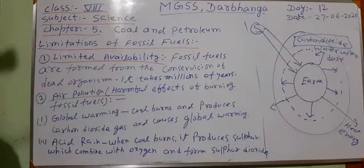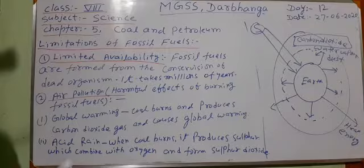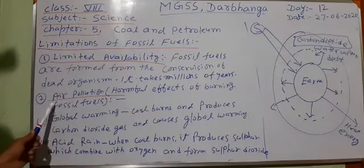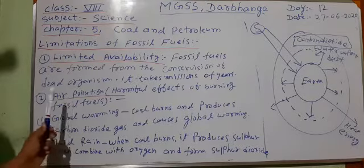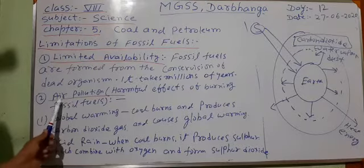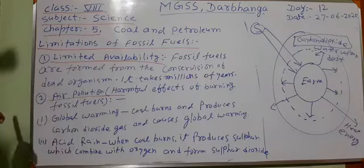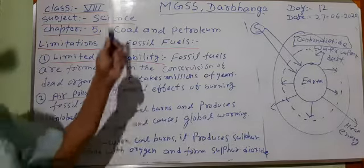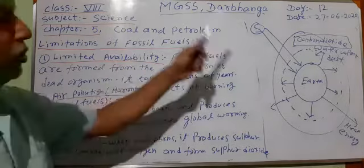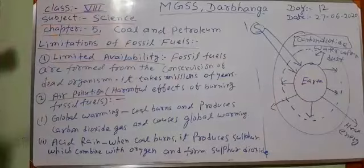Why does carbon dioxide increase in the atmosphere? One most important reason is the burning of coal. When coal burns, it releases carbon dioxide which goes to the atmosphere, and the temperature of the earth surface increases, causing global warming.